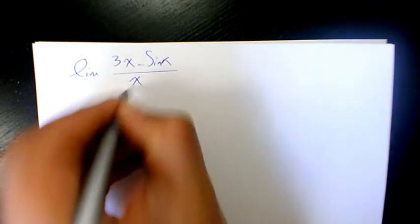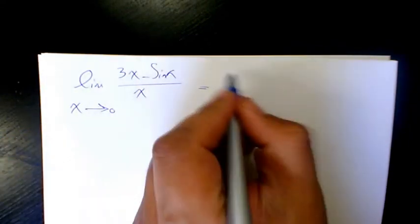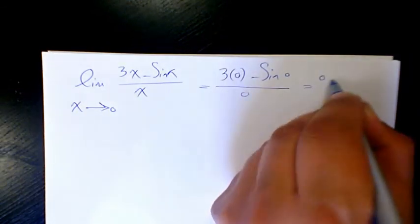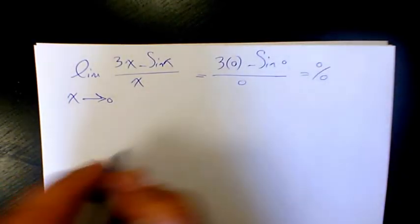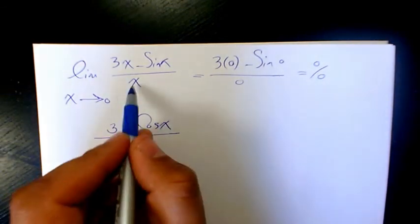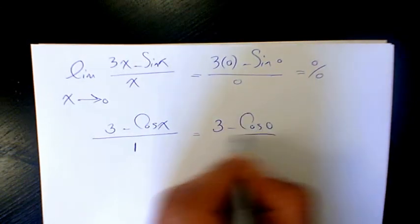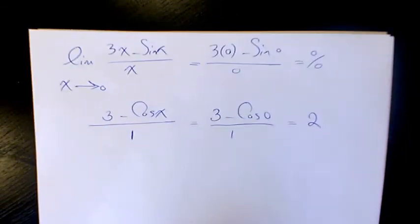For example, we have limit of (3x - sin x) over x when x approaches 0. When you substitute, it's (3 times 0 - sin 0) over 0, which is 0 over 0. So we're going to use L'Hôpital rule. The derivative of the numerator is (3 - cos x) divided by 1. So it's (3 - cos 0) over 1, which is 3 minus 1, and that equals 2.